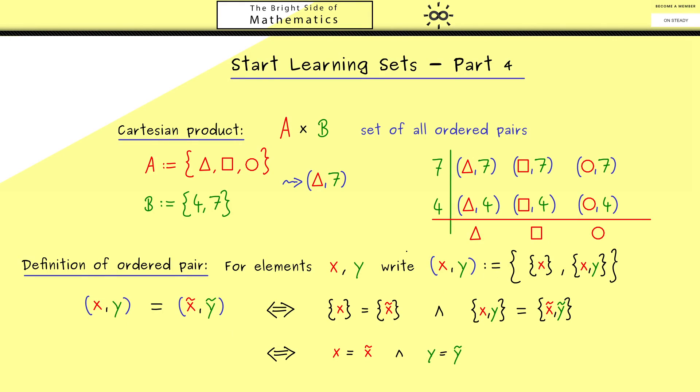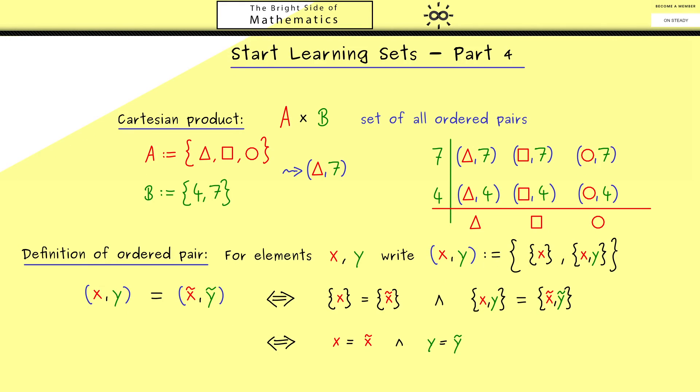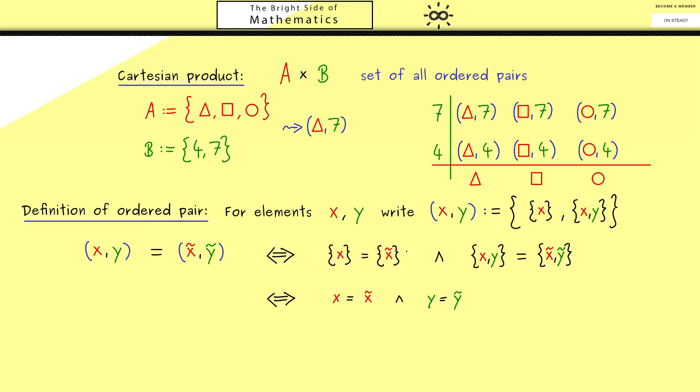Now, by knowing what an ordered pair really is, we can write down the definition of the Cartesian product. So A times B is the set that has all ordered pairs as elements. From this point on, every time you see this cross as a multiplication sign between two sets, you know it simply denotes this Cartesian product.